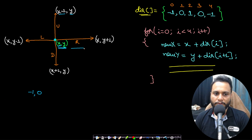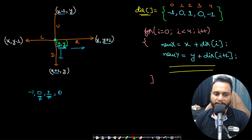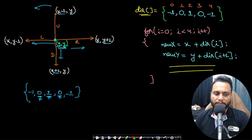To move right, the row stays the same (add 0) and the column increases by 1. To move down, the row increases by 1 and the column stays the same (add 0). To move left, the row stays the same (add 0) and the column decreases by 1. Using these offsets, we can build a direction array.